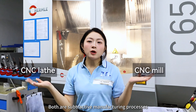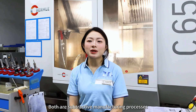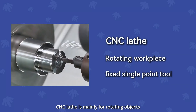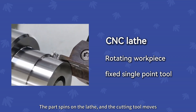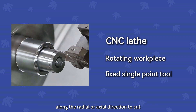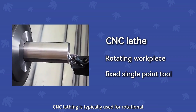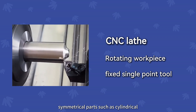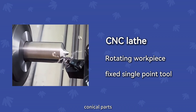Working principle. Both are subtractive manufacturing processes, but they differ in how they work. CNC lathe is mainly for rotating objects. The part spins on the lathe, and the cutting tool moves in the radial and axial direction to cut. CNC lathing is typically used for rotationally symmetrical parts such as cylindrical and conical parts.